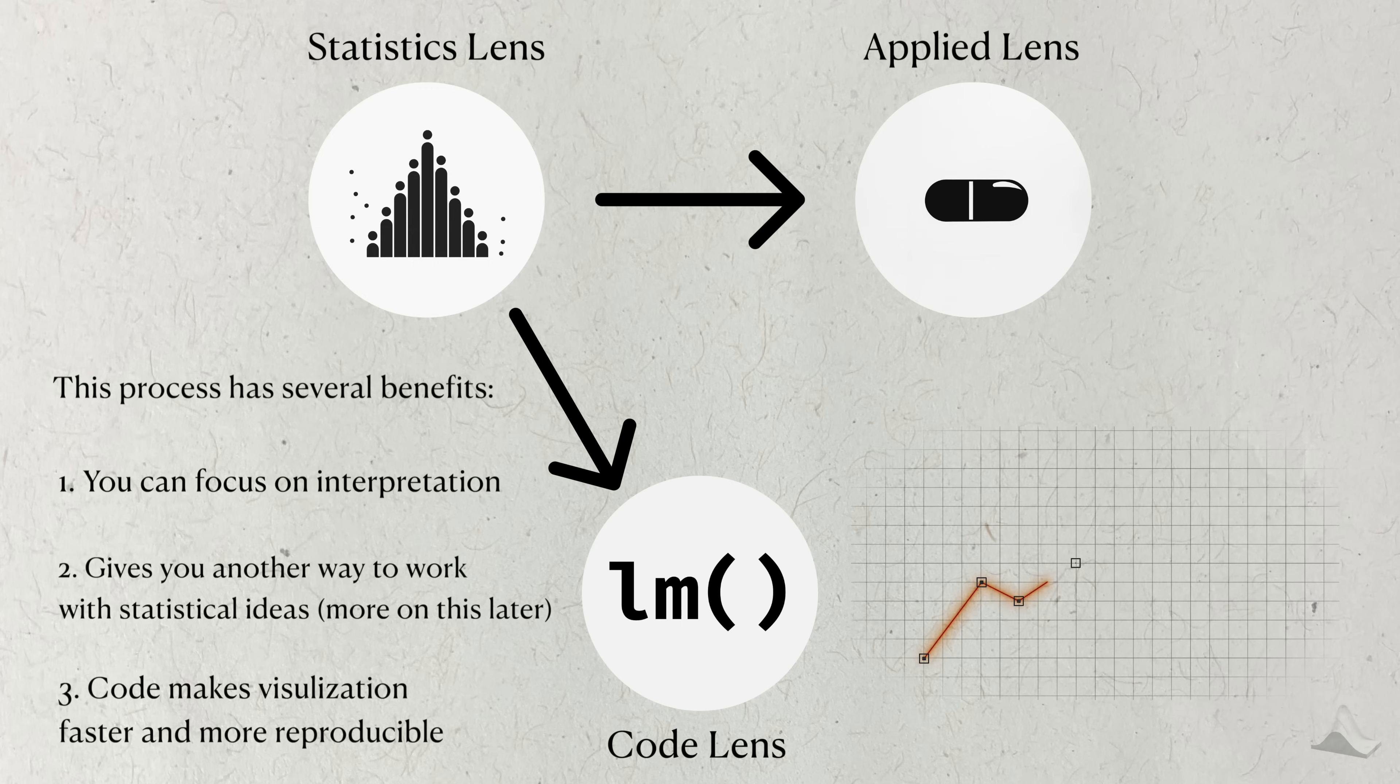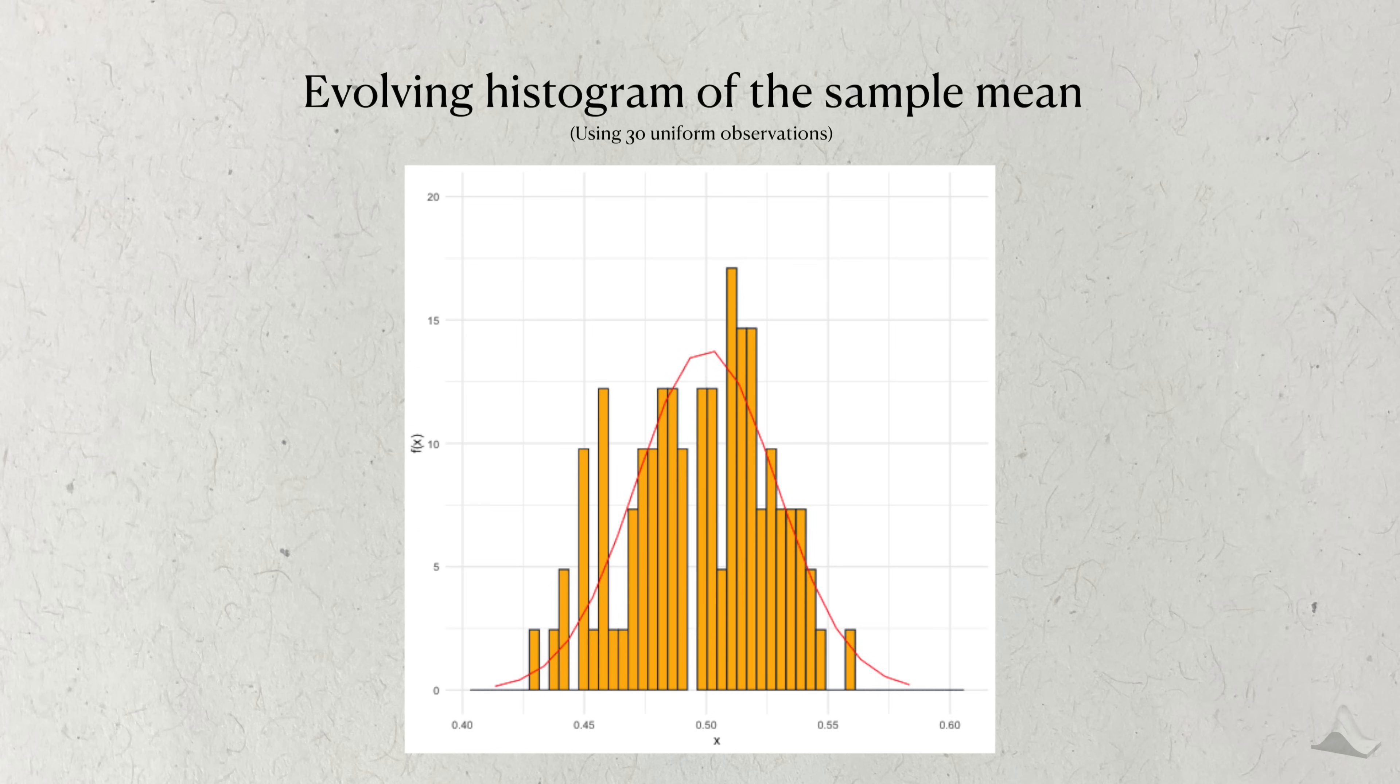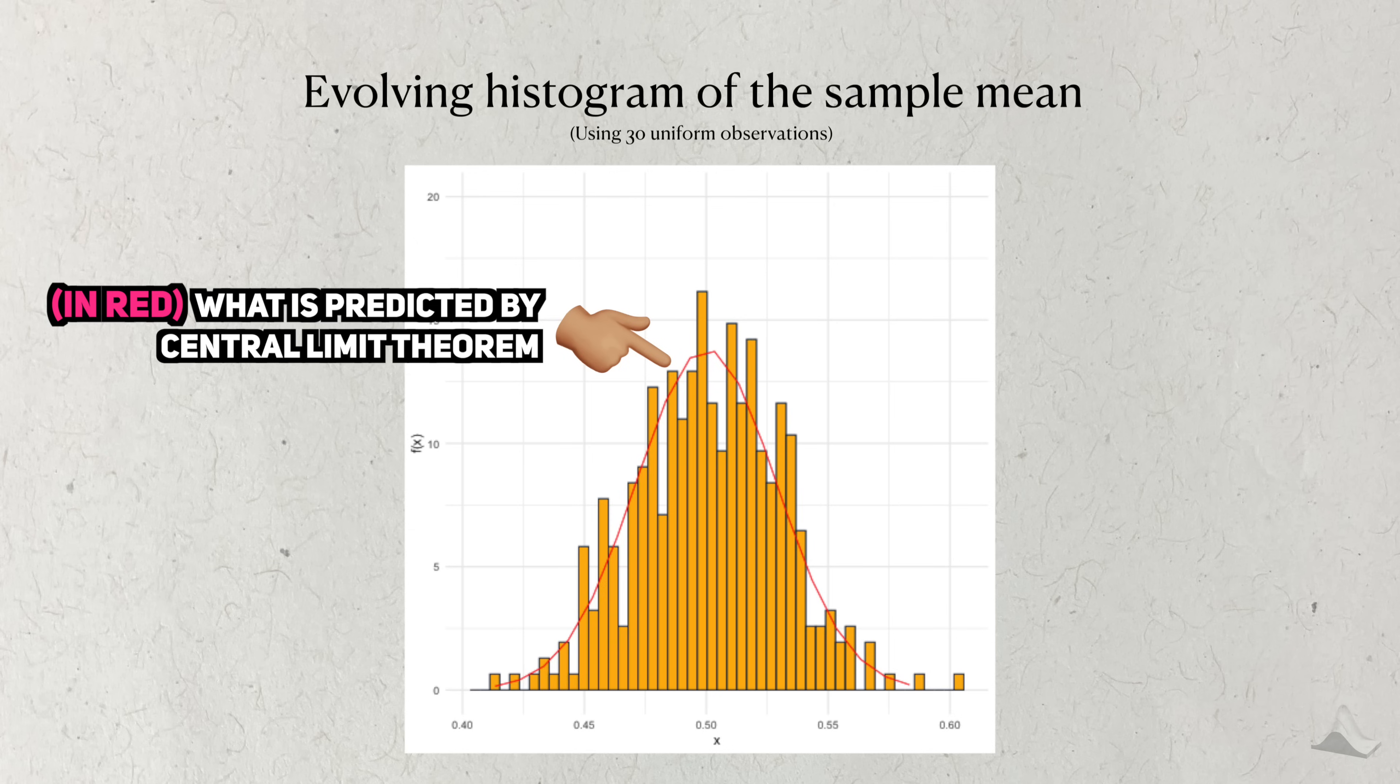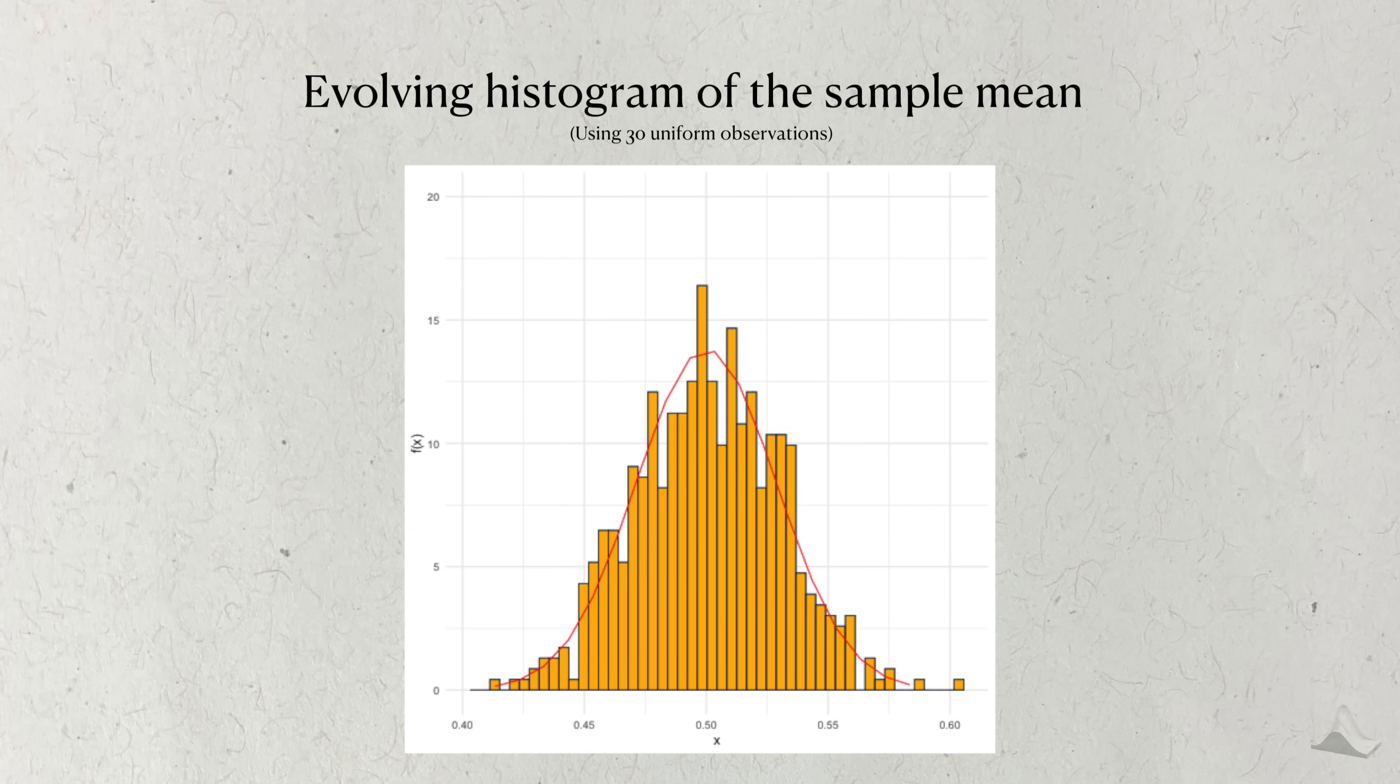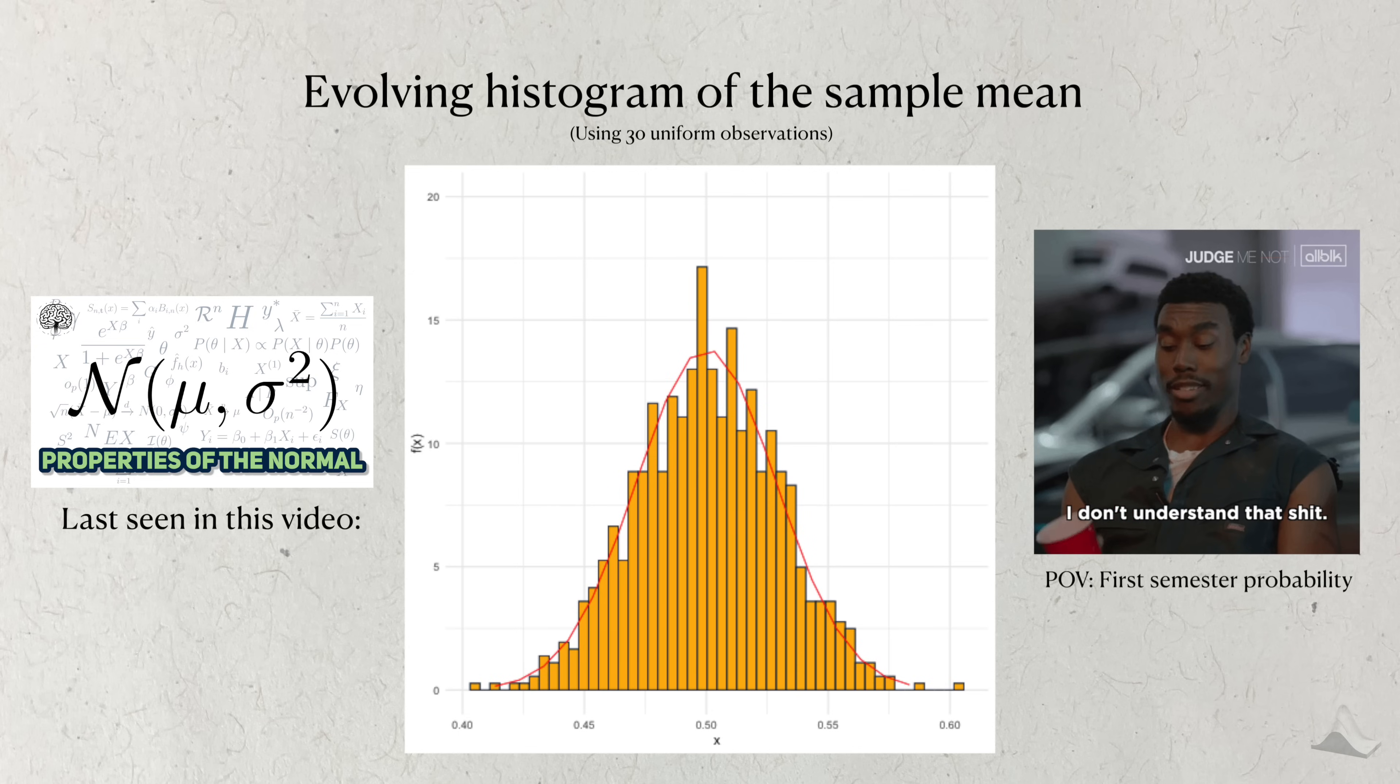And third, code gives you a faster, reproducible way to visualize these concepts. Here's an animation of me plotting the histogram of many sample means. I wanted to see how the histogram compared to what I should expect in theory, given by the central limit theorem. And almost like magic, the histogram begins to fill the normal PDF. I used this visualization in my explainer for the normal distribution, but it was originally something I made when I was first trying to understand the central limit theorem.